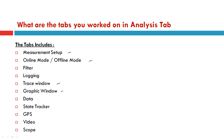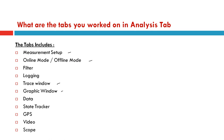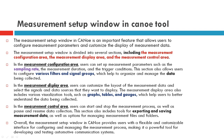The third question: what do you know about the measurement setup window in CANoe? The measurement setup window is an important feature that allows users to configure measurement parameters and customize the display of measurement data. The measurement setup window is divided into three sections: the measurement configuration area, the measurement display area, and the measurement control area.